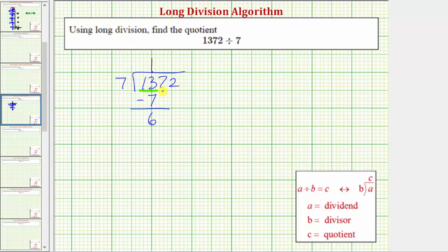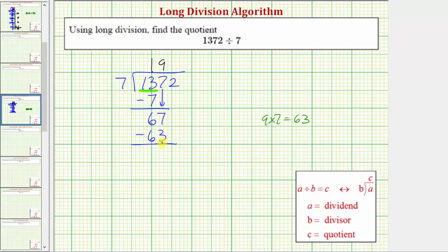Now we bring the next digit in the dividend down, which is the seven. Bringing the seven down, this is now 67. Now we repeat the process. We need to determine how many sevens there are in sixty-seven. Because nine times seven is equal to sixty-three, and ten times seven would be more than sixty-seven, there are nine sevens in sixty-three, so the next digit in the quotient is nine, which we place in the tens place value above the seven. Now we multiply by the divisor. Nine times seven is sixty-three. Place the sixty-three below the sixty-seven, and we subtract. If the nine is correct, this difference will be less than seven. Sixty-seven minus sixty-three is four. Because four is less than seven, the nine is correct.